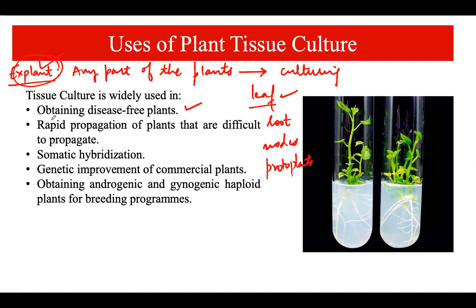Plant tissue culture is widely used to obtain disease-free plants. Because we maintain aseptic conditions and ensure no contamination occurs during the culturing process, the resulting plants are disease-free. It also enables rapid propagation of plants that are difficult to propagate — for example, those with non-viable seeds or those that are season-dependent — and such plants can be rapidly multiplied using this technique.